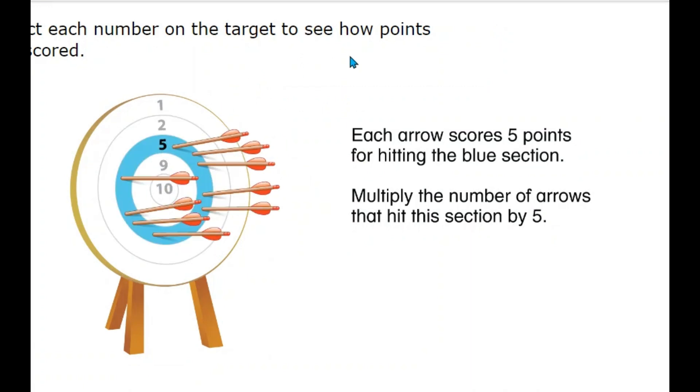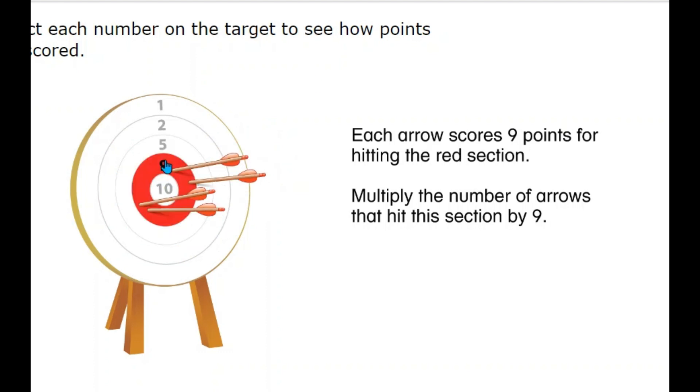Each arrow scores 5 points for hitting the blue section. Multiply the number of arrows that hit this section by 5. Each arrow scores 9 points for hitting the red section. Multiply the number of arrows that hit this section by 9.